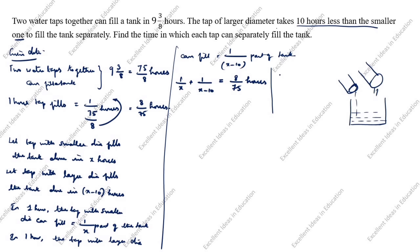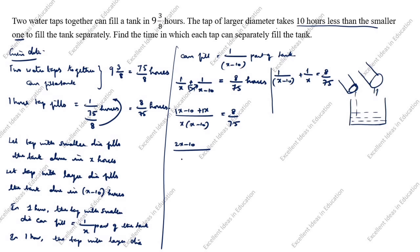We can also write it as 1/(x minus 10) + 1/x = 8/75 — both orderings give the same answer. We take the common denominator x(x minus 10): the numerator becomes (x minus 10) + x = 2x minus 10. So (2x minus 10) divided by x(x minus 10) = 8/75. Cross multiplying: 75(2x minus 10) = 8(x² minus 10x).